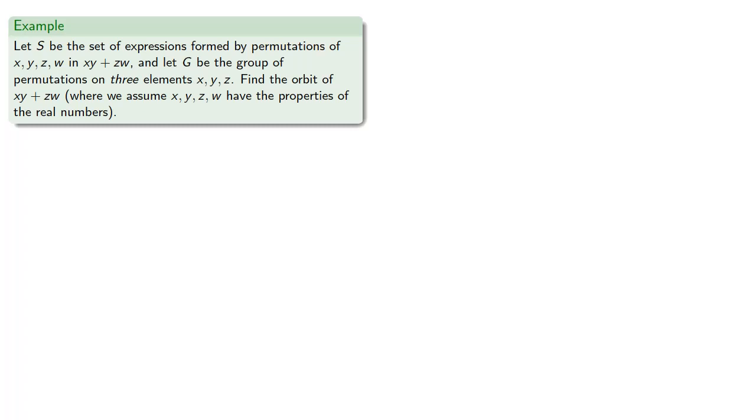And so let's find the orbit of this element, X, Y plus Z, W. And here we're assuming that our variables have all the properties of the real numbers. So we'll abuse notation a little bit and write sigma applied to X, Y plus Z, W to indicate that we're applying the permutation sigma to X, Y plus Z, W.